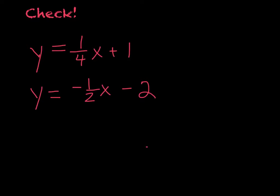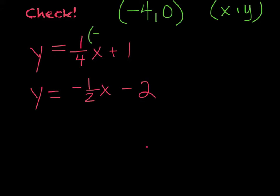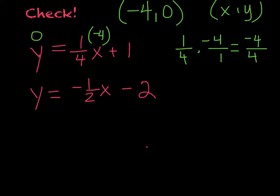Now we're going to check to see if we did that right. We got negative four comma zero. I'm going to plug that in. Remember, it's always x comma y, so for x I'll plug in negative four, and y is zero. One-fourth times negative four — I can put a one underneath, multiply straight across — I get negative four over four, which is negative one.